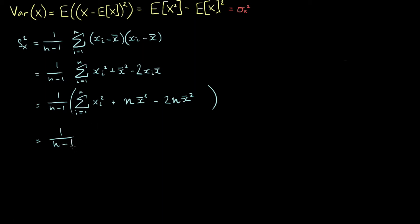We've simplified the second and third terms as much as we can. We can combine them: plus n·x-bar squared minus 2n·x-bar squared gives minus n·x-bar squared. So our final equation is 1 over n minus 1 times the sum of xi squared minus n times x-bar squared. If someone gives us the sum of all the squares of our data, we can simply compute the sample variance from this.